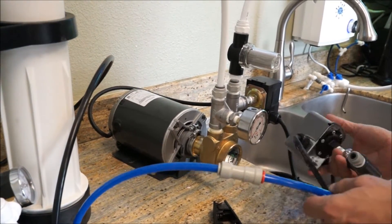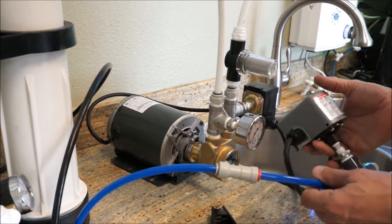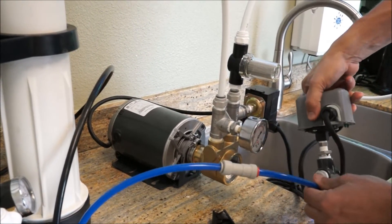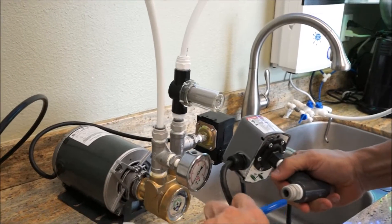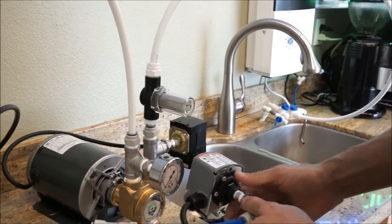And then I'm going to cut the blue line again. And that's going to go into the high pressure switch. There's really no orientation to which way the high pressure switch needs to get plumbed. So you can just plumb it however is convenient for you.